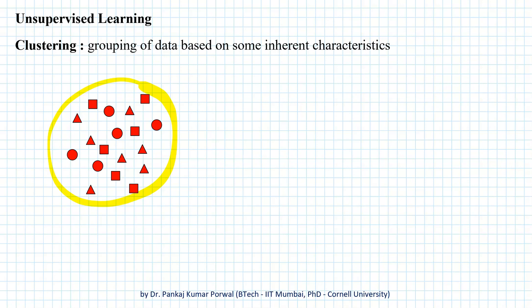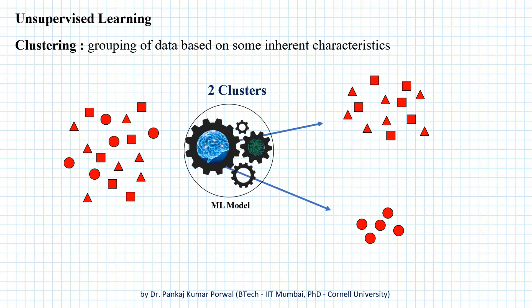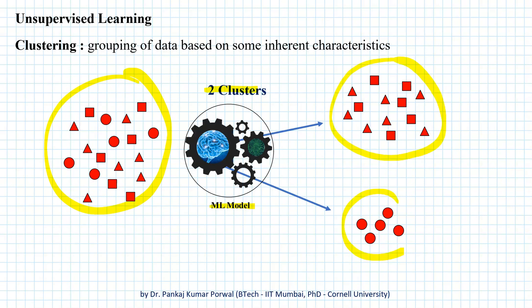Looking at the individual objects, one possible clustering may be items which are polygons — like triangles and squares — forming one cluster, and circles forming another cluster. This is one possible way in which our machine learning model can learn parameters to partition the data set into two clusters. Because we do not have any output labels, we cannot guarantee this is the only possible clustering, but it is one way inherent characteristics can lead to two clusters.